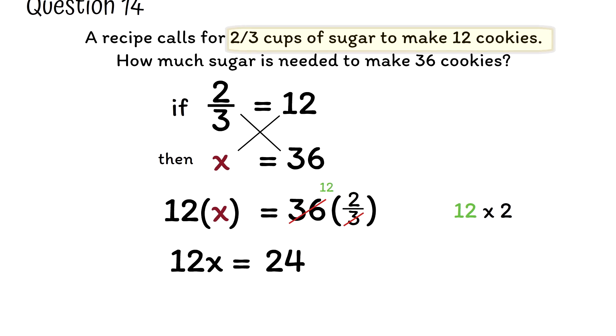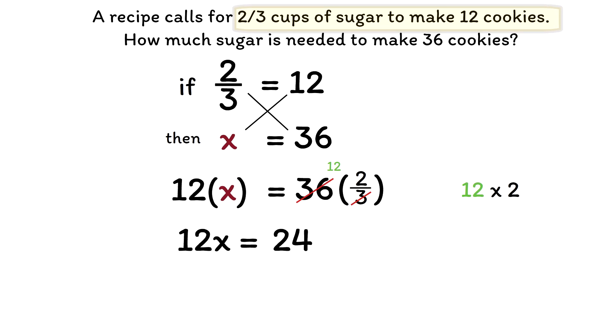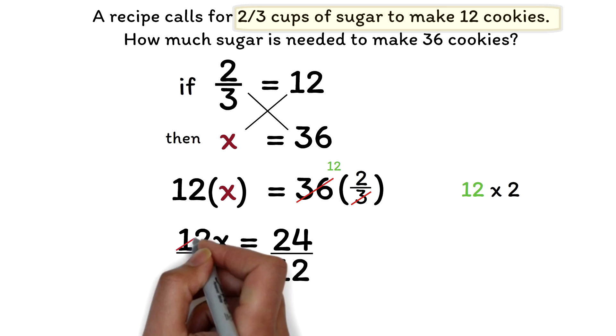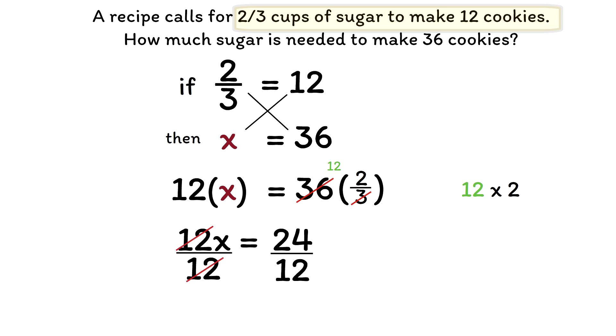Now to find x, divide both sides of the equation by the coefficient of x, which is 12. 12 will cancel 12 at the left side of the equation. 24 divided by 12 is 2. Therefore, x, which is the cups of sugar needed to make 36 cookies, is 2.